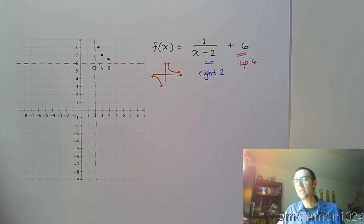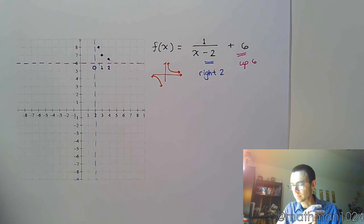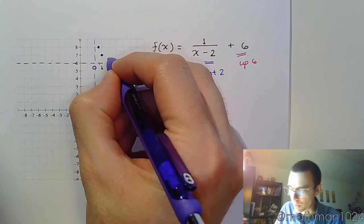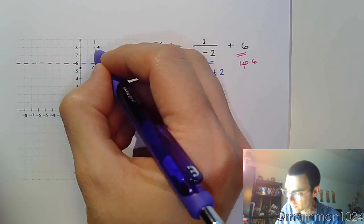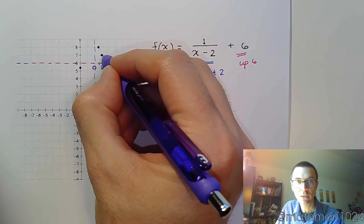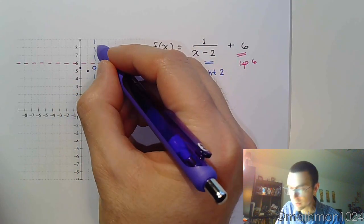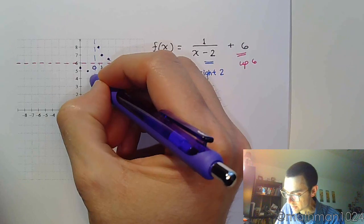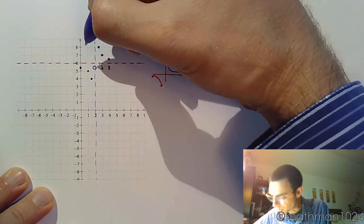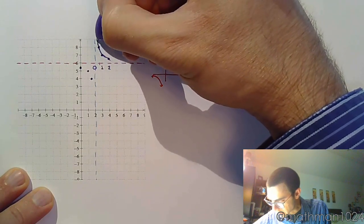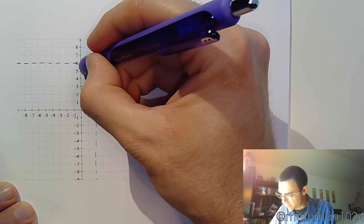We've seen other functions with this point symmetry, namely the cube root function and the cubing function. So if I want to copy each point: instead of going 2 and 1/2, go negative 2, negative 1/2. Instead of going 1, 1, go negative 1, negative 1. The point at 1/2 up 2 becomes left 1/2, down 2. From here, we know what our shape is — we connect these points as best we can to get the two branches of the curve.